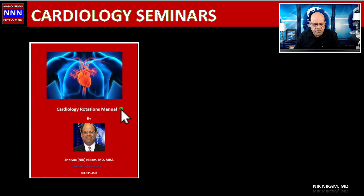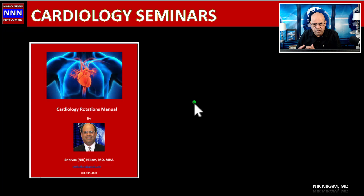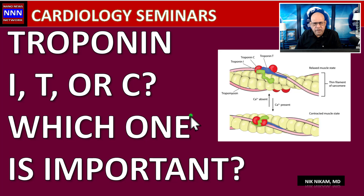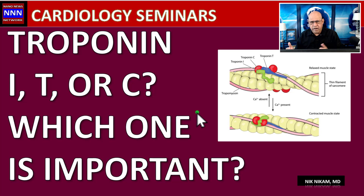I also have a cardiology rotations manual consisting of almost 180 pages of useful information for people rotating through cardiology service, so you can enhance your understanding of cardiology patients and how we manage them in the hospital. The feature presentation is: Troponin I, T, or C — which one is important, and what does troponin do in terms of diagnosis and predicting outcomes in patients with various types of cardiac diseases?